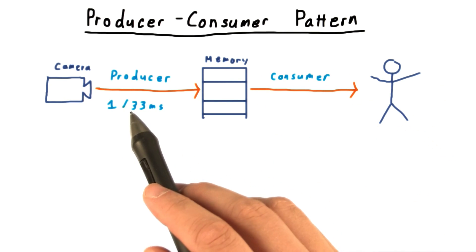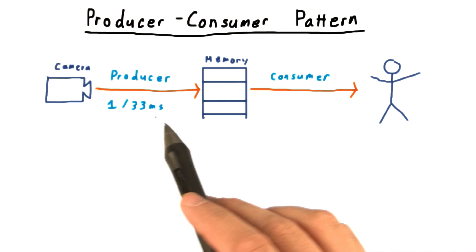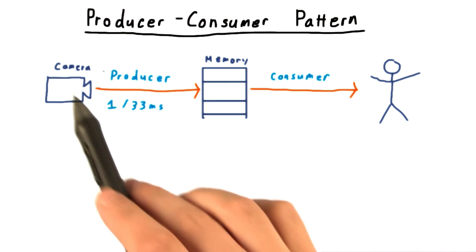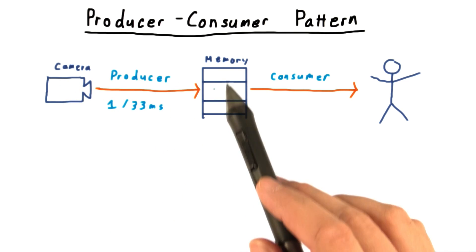Now for this scenario, suppose the images are available from the camera every 33 milliseconds. We want to get all of them, so we're going to have a thread whose job is just to copy the frame from the camera into computer memory.